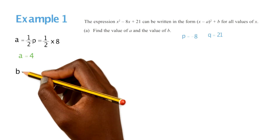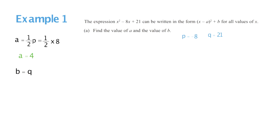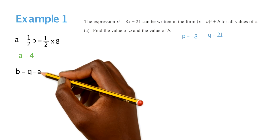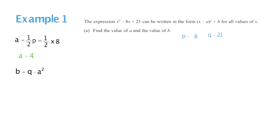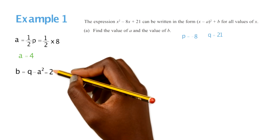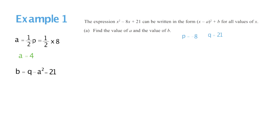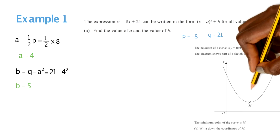Now we're going to work out our b value. The formula for b is q take away a squared. So our q value of 21 minus our a squared — which is minus 4 squared — gives us a b value of 5.